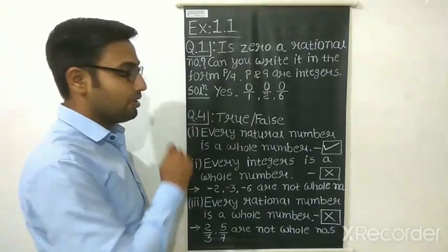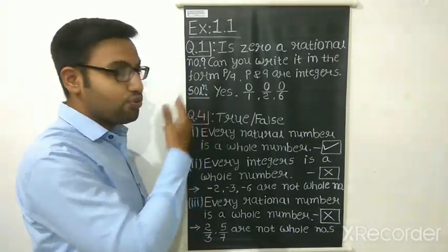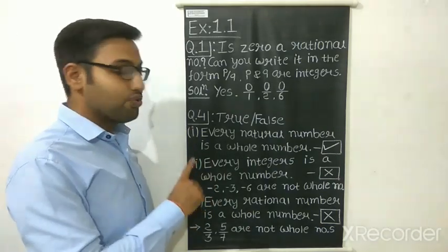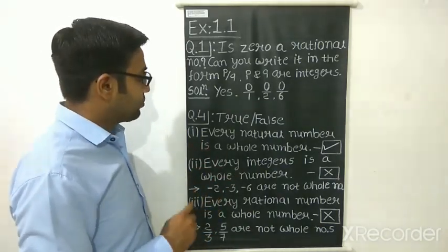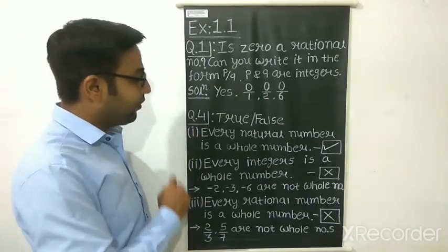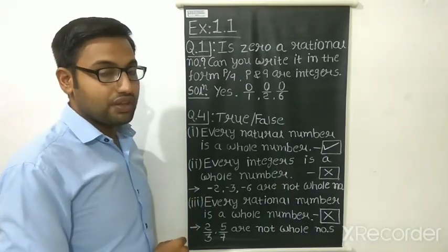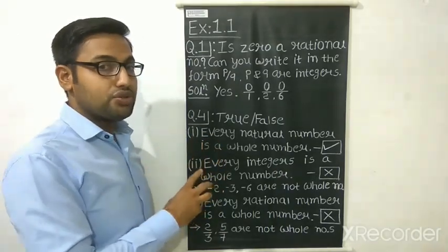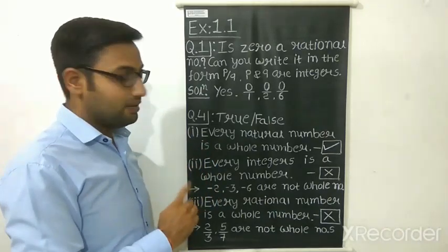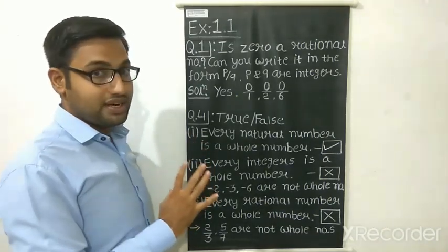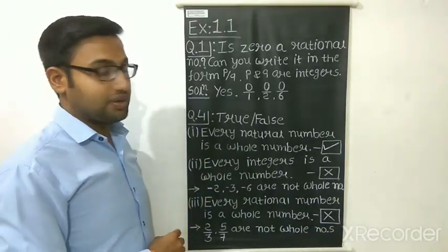Now we will study question number 4. Questions 2 and 3 will be studied in the next lecture. These are true/false statements based on our number sets knowledge, and now that we know the number sets and their properties, we can answer these statements.